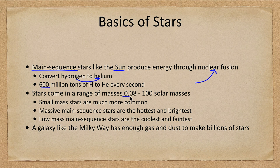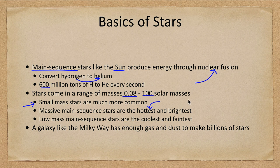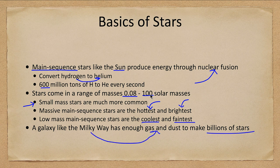The mass range of stars goes from a little less than a tenth the mass of the Sun to about a hundred solar masses. The smaller stars are more common, while the more massive main sequence stars are hotter and brighter. The lowest-mass main sequence stars are cool and faint. A galaxy like our Milky Way has the gas and dust to make billions of stars.